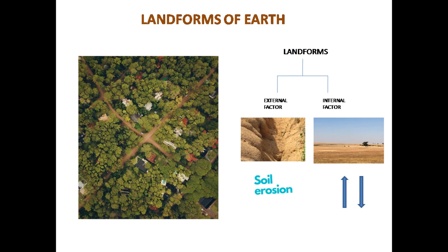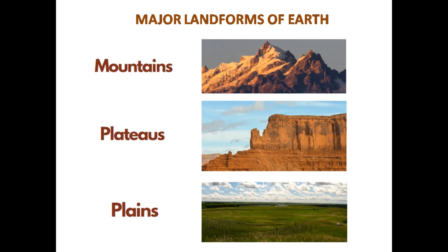We know our earth is spinning on its own axis, and at the same time there are some internal movements in the earth too. The land portions of earth sink and uplift due to this factor. Likewise, the outer land areas are often eroded due to agents like air and water, and soil erosion and deposition occur due to them. Due to these internal and external causes, the landforms of earth are formed. The major ones we are going to cover in this chapter are mountains, plateaus, and plains.